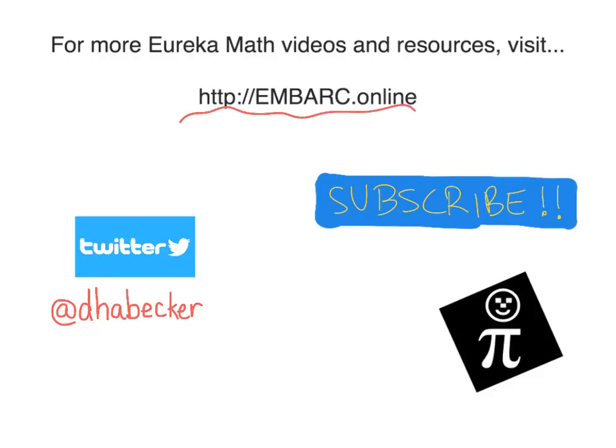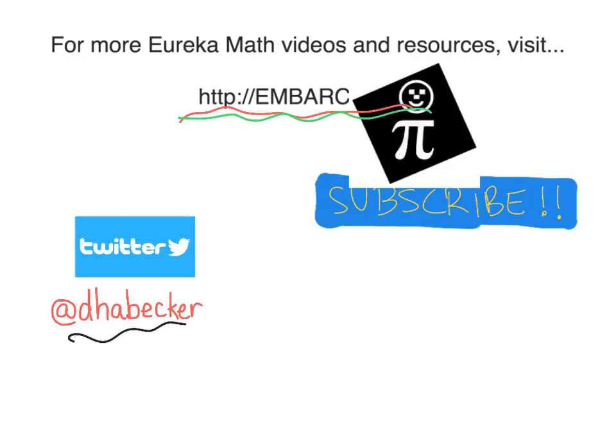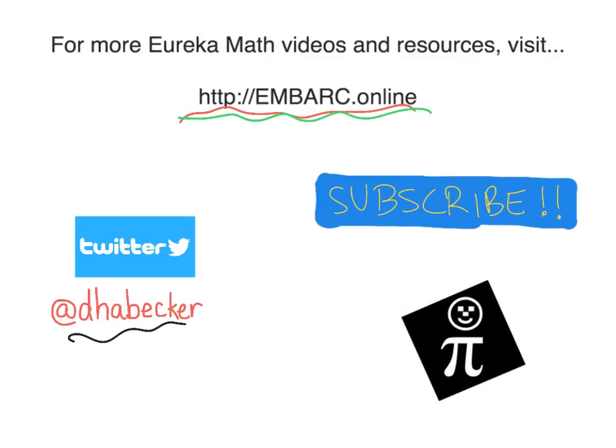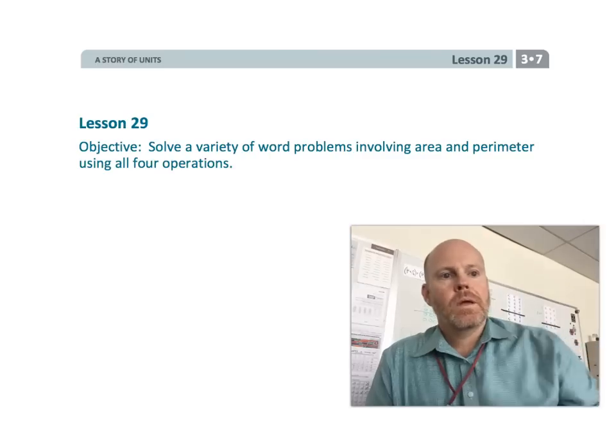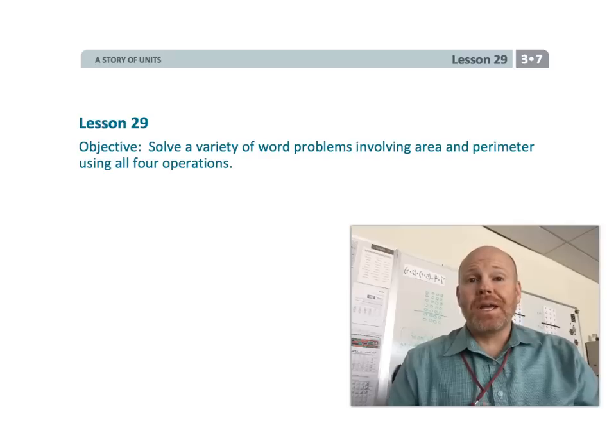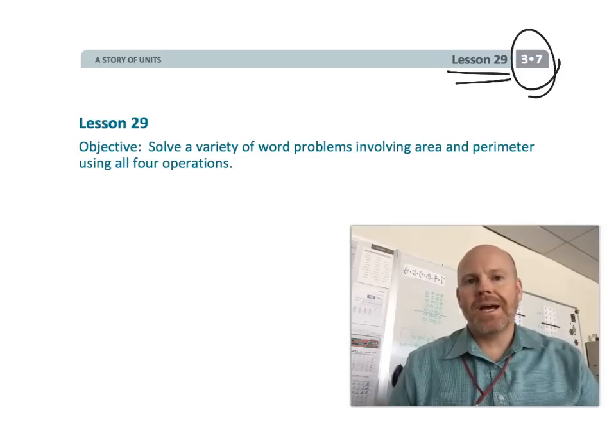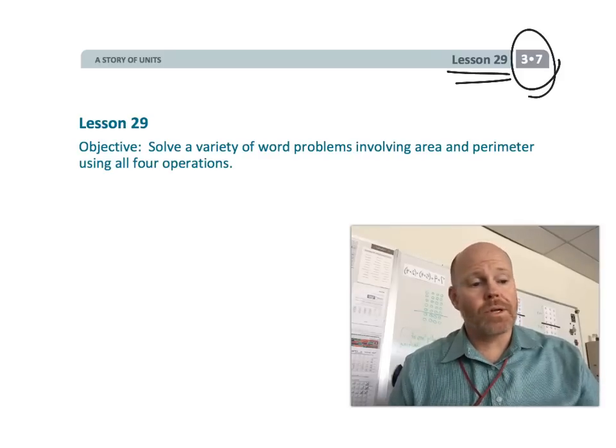Hey, thanks for watching this video. There's more at Embark Online, you can tweet me, and there is the Pie Guy. All right, this is third grade Module 7 Lesson 29, and in this lesson students are going to continue practicing area and perimeter in a variety of word problems.